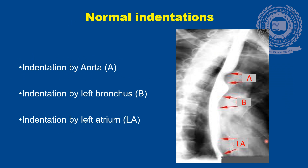It is very important to know the normal indentations, because while reporting a normal barium swallow study we have to identify what is normal and what is abnormal. In this image, as we can see, the first indentation is caused by the aorta, the second indentation is caused by the left main bronchus, and the third indentation is by the left atrium. These indentations are caused by the surrounding structures on the contrast-filled barium column.